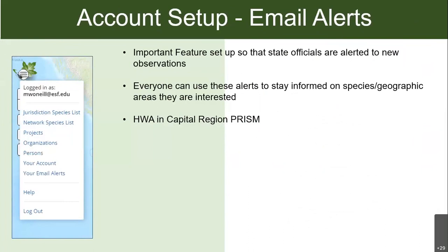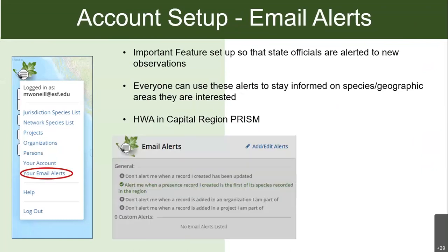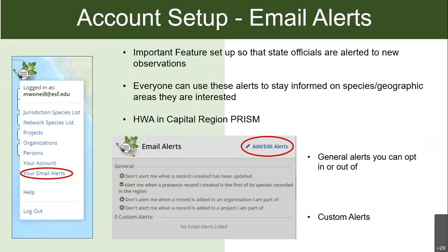One more feature of account setup is email alerts. These were set up so that state officials could be alerted to certain species in certain areas, but really everyone can use them to stay informed on the species and areas they're interested in. For example, I live within the capital region PRISM and I'm interested in HWA, so I have an alert set up that notifies me whenever there's a new observation in the area. That's also on the main menu under your account — click 'Email Alerts,' then click 'Add/Edit Alerts.' You'll see general alerts you can opt in or out of and can add custom alerts filtered by species, location, and other advanced options.